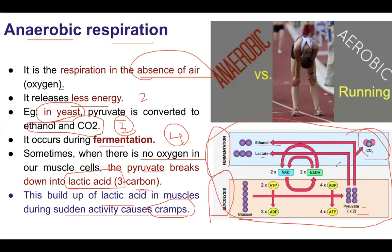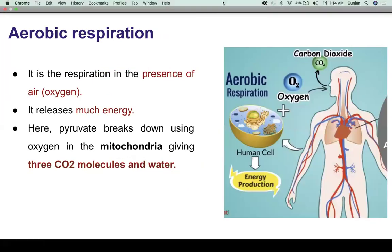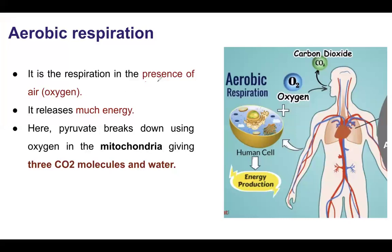In the anaerobic pathway, the final ATP formed is 2 ATP. That summarizes anaerobic respiration. Now we move to aerobic respiration. Aerobic respiration occurs in the presence of oxygen. It produces much more energy — 30 to 32 ATP.